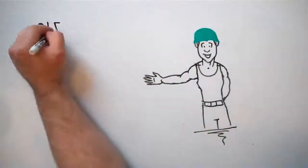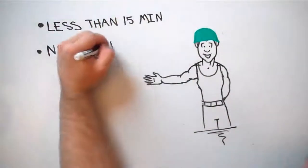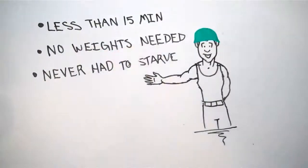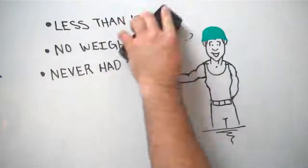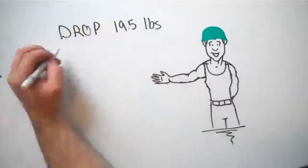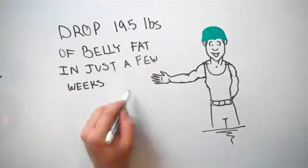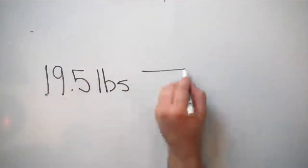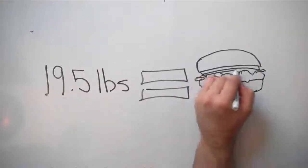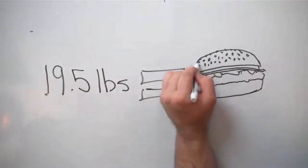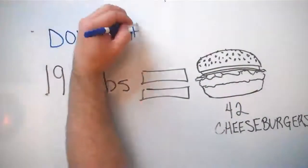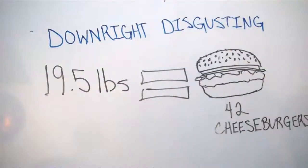Our workouts were less than 15 minutes long, and most of them didn't even involve any weights. And when it came to eating, I never had to starve myself or count the number of calories I was putting in my mouth. Using this unusual method, I was able to drop 19.5 pounds of fat from my belly in just a few weeks. You've probably never thought of it like this, but I looked it up and 19.5 pounds of fat is actually equal to carrying around 42 cheeseburgers. Can you believe that? It's downright disgusting when you think about carrying all that extra crap around with you.